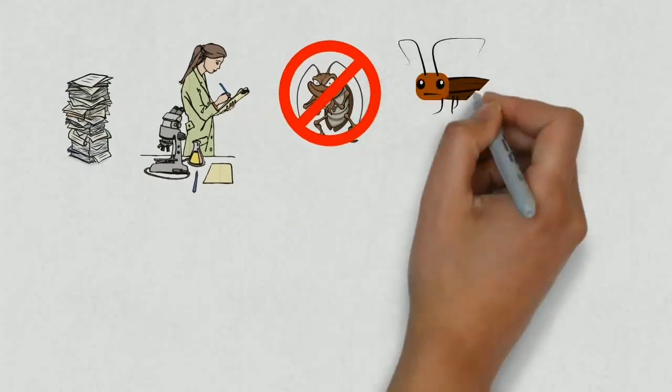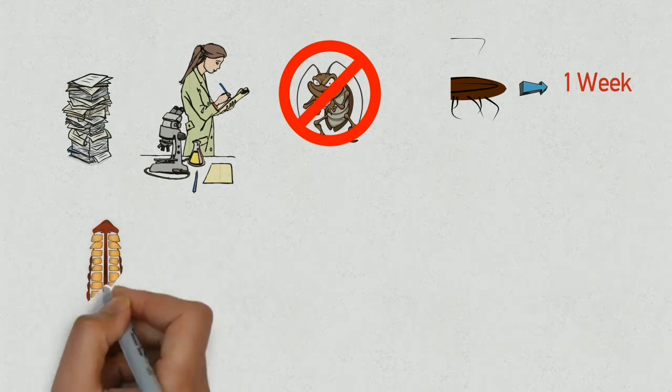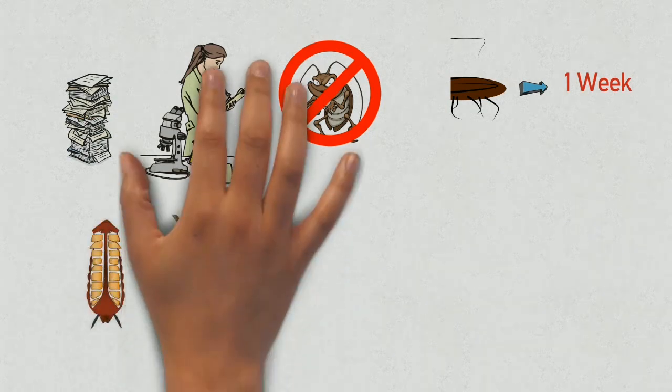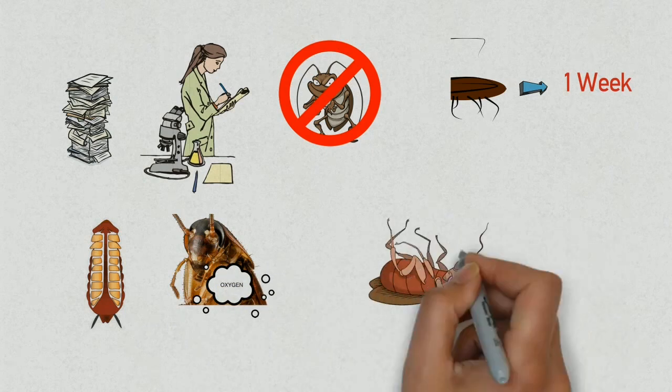A cockroach can live for a week without its head. Due to its open circulatory system, it is not dependent on the mouth or head to breathe. It only dies from thirst without a mouth to drink water.